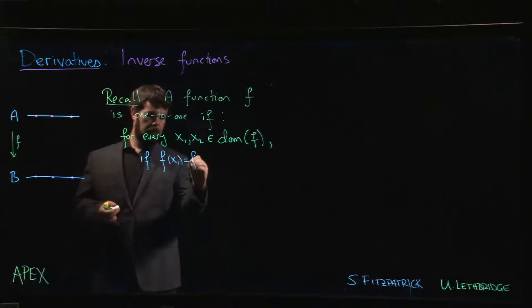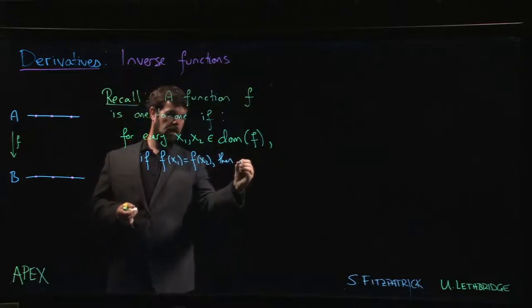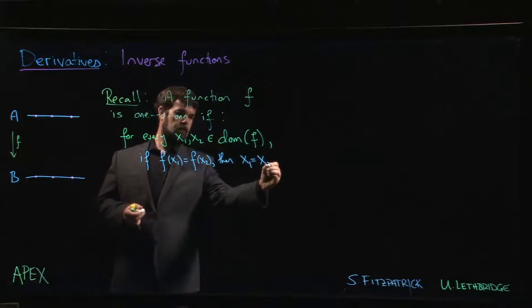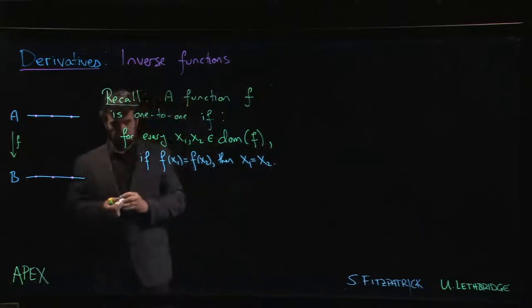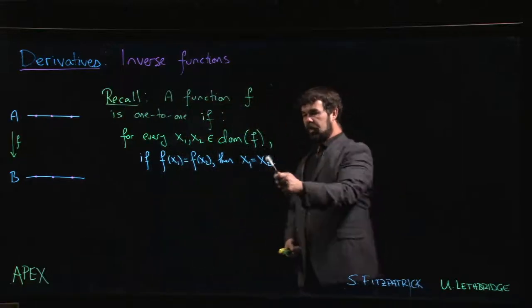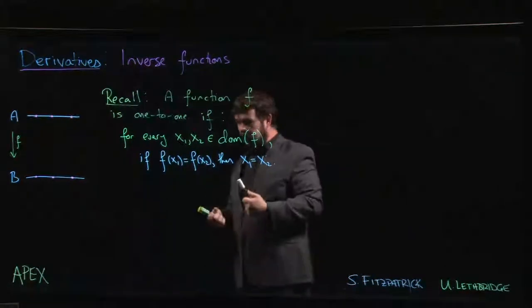then x₁ has to equal x₂. An equivalent way of phrasing this is to say that if x₁ isn't equal to x₂, then f(x₁) has to be different from f(x₂). This is an extra condition that you're imposing on functions. This is not something that's necessarily true of every function.